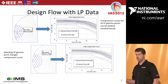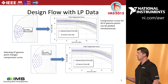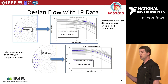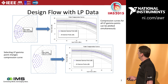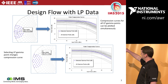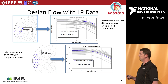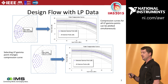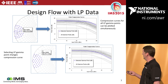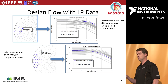Conversely, instead of choosing an input power level and plotting contours, you can choose a gamma point or impedance and plot swept data. We pick a gamma point out of the locus of impedances in the load pull file and plot gain compression curves. The grayed-out traces are gain compression curves for all the gamma points in the file, and the dark blue trace corresponds to the one selected with the marker. Moving the marker to another gamma point updates the gain compression curve for that impedance.